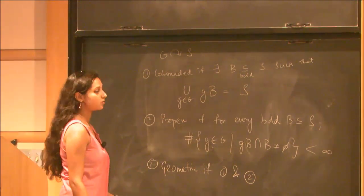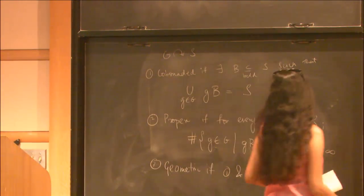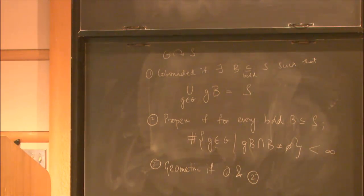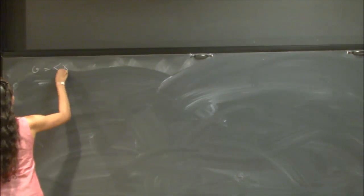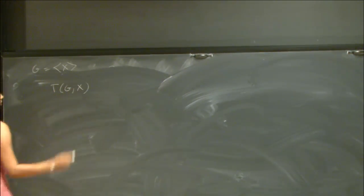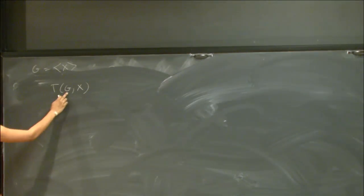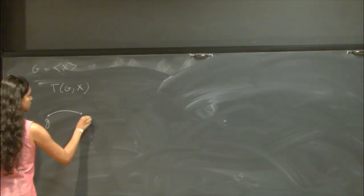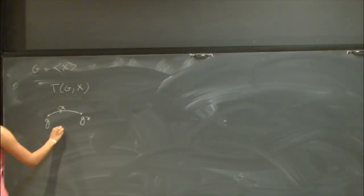An action is said to be geometric if it is both proper and co-bounded. Now, luckily for groups there exist very natural metric spaces on which our group acts — the Cayley graph of our group. If we are given a generating set X of our group G — and when I talk about generating sets I don't necessarily mean just finite generating sets, I also consider infinite generating sets — then associated to this generating set and this group I can build a Cayley graph denoted Γ(G, X).